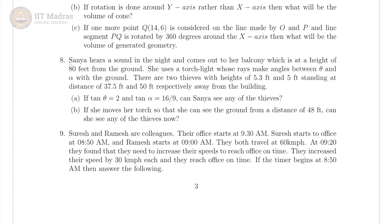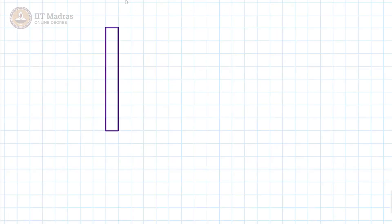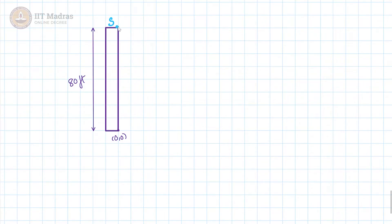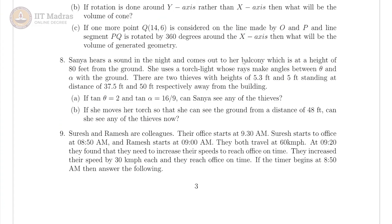The eighth problem is pretty interesting. We have Sanya who hears a sound in the night and she comes out to her balcony, which is at a height of 80 feet from the ground. Let this be our tower which has a height of 80 feet. If we take this point to be our origin (0, 0), Sanya is here at (0, 80), and she uses a torch light which makes angles theta and alpha with the ground. The rays from the torch light make angles between these two.